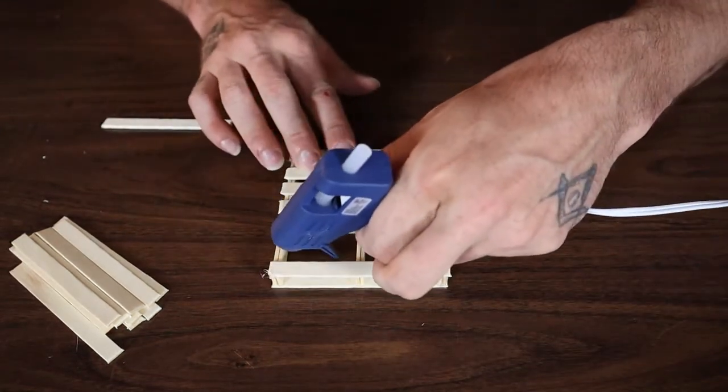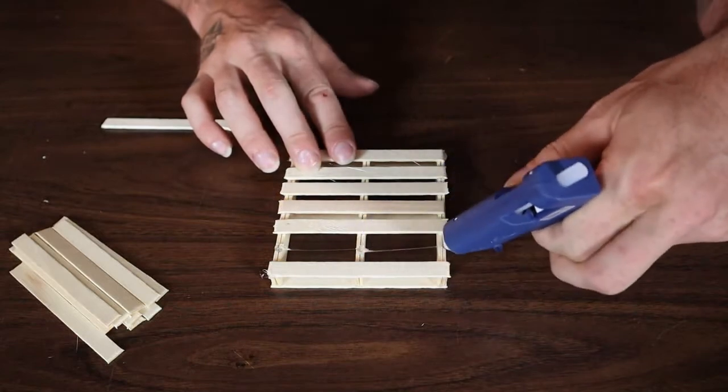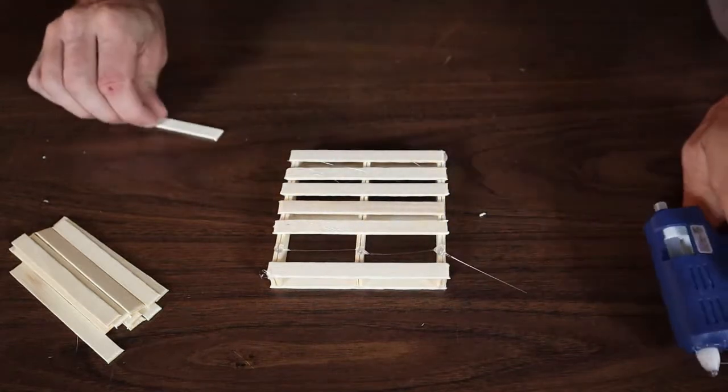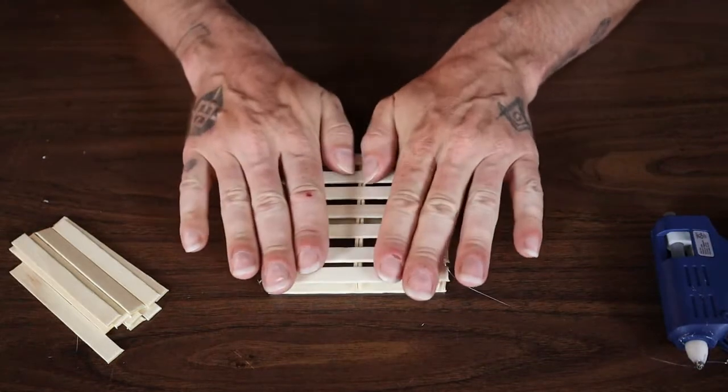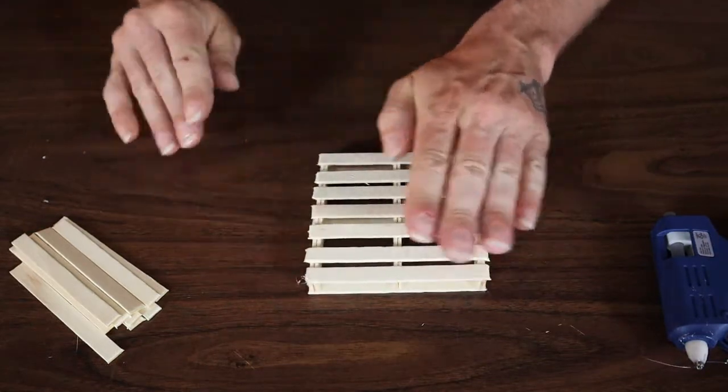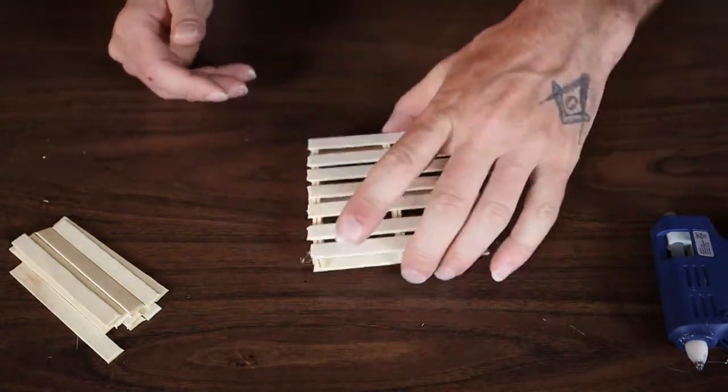We'll just get our final top crosser on there and then you're pretty much done this pallet. It's really quick. It's really simple. You can use this for a coaster, you can set something on it, just use it decoratively, set a plant on it. These are really cool. I really like these.